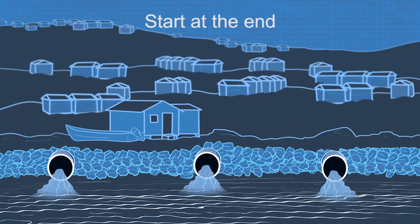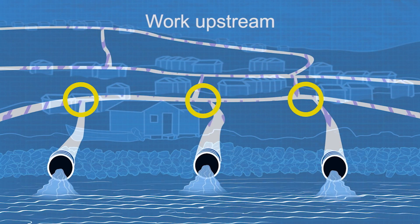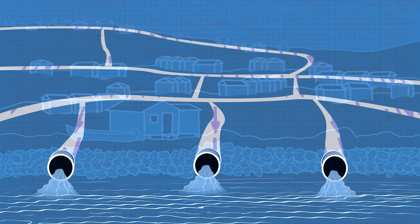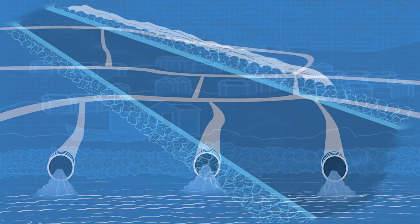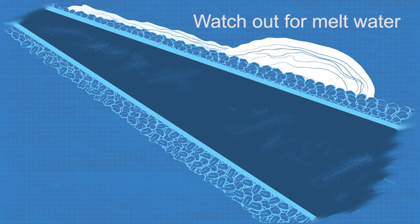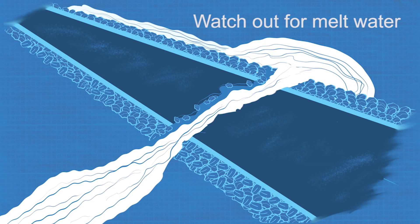Always start at the end of the drainage system and work your way upstream. Remember that some culverts may re-freeze at night when the temperature goes down and may need to be opened again. Keep a close eye on meltwater pouring onto a roadway or a driveway approach. The water can erode pretty quickly if it isn't diverted.